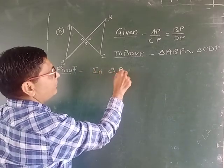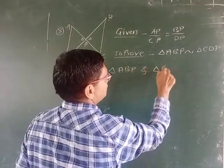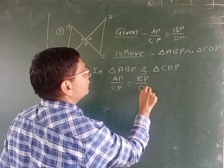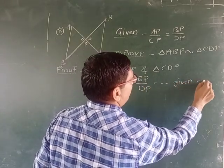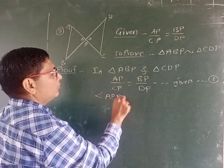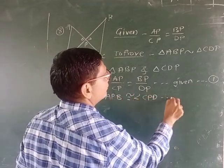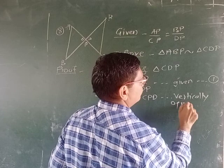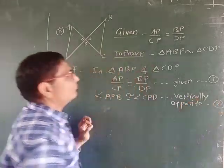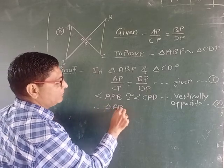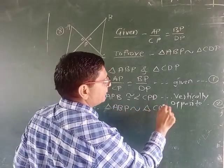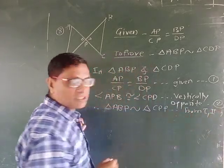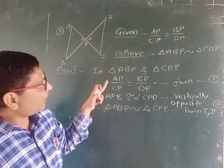In triangle ABP and triangle CDP, CP is equal to BP upon DP. And one angle ABP congruent to angle CPD, vertically opposite. This is equation 2. From 1 and 2, therefore triangle ABP is similar to triangle CDP from which test? SAS.